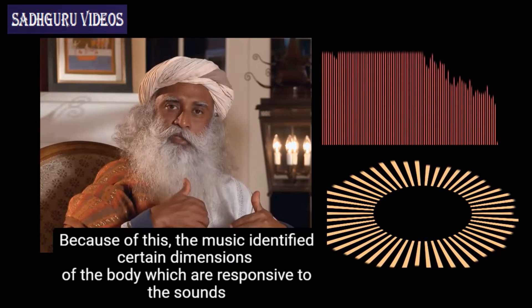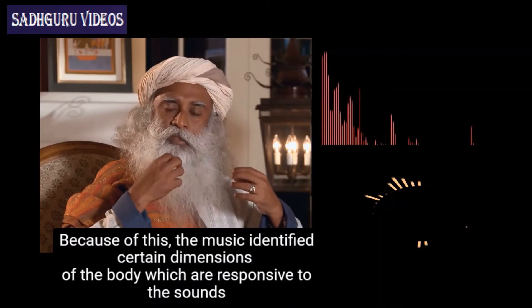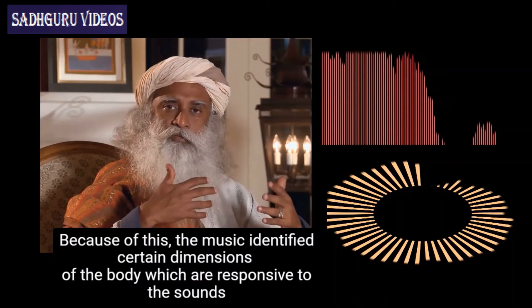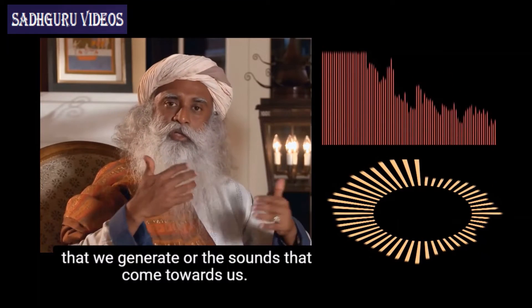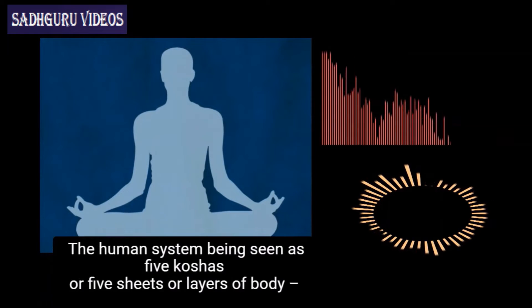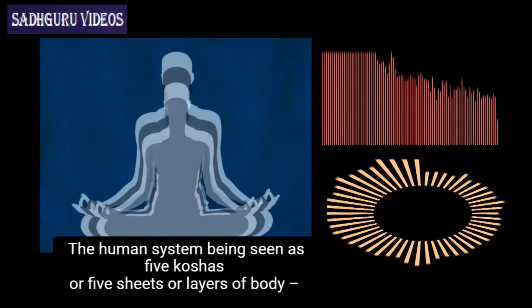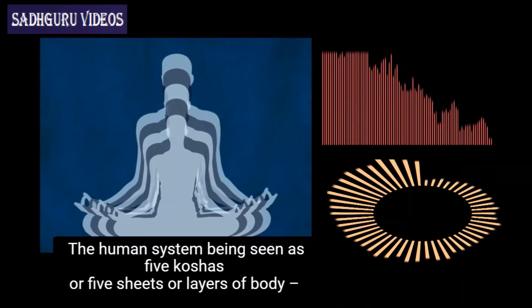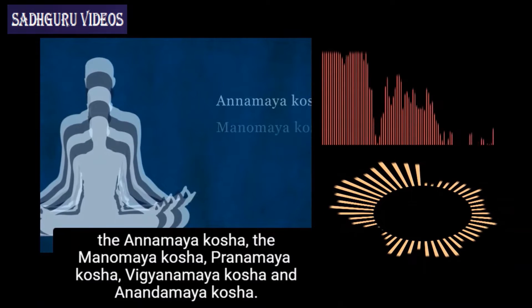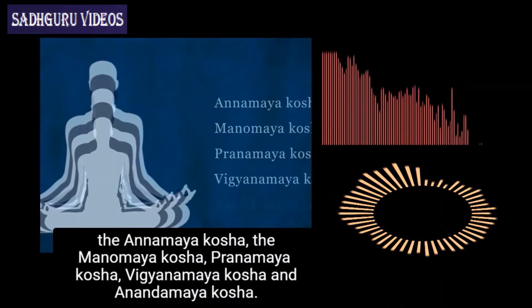Because of this, the music identified certain dimensions of the body which are responsive to the sounds that we generate or that come towards us. The human system is seen as five koshas or five sheets or layers of body: the annamaya kosha, the manomaya kosha, pranamaya kosha, vijyanamaya kosha, and anandamaya kosha.